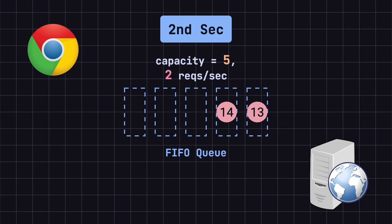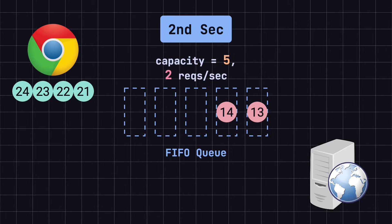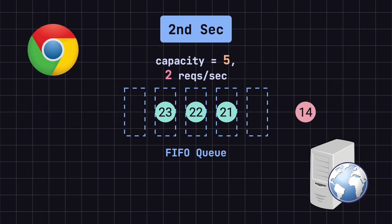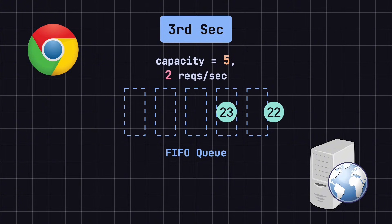At the start of the second second, the user sends four more requests. Now, with two requests already in the queue, there are a total of six requests. Since the queue capacity is five, only the first three new requests are kept, and one extra request is discarded. During this second, the system processes two requests, leaving three in the queue. In the third second, no new requests arrive, so the system processes two of the remaining requests, leaving one request in the queue.